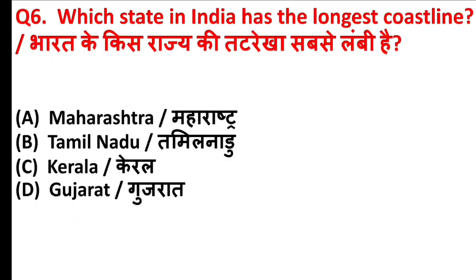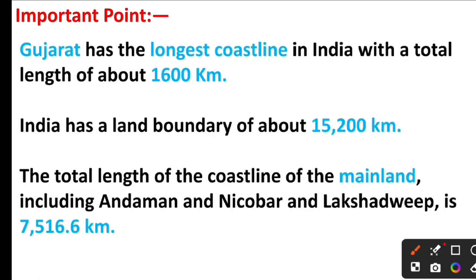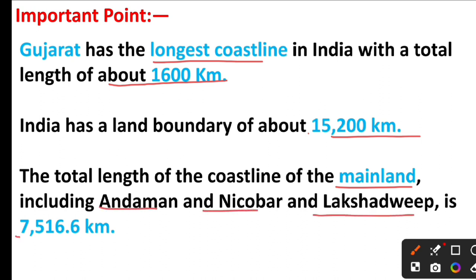Which state in India has the longest coastline? The answer is Option D, Gujarat. The capital of Gujarat is Gandhinagar. Gujarat has the longest coastline in India with a total length of about 1,600 km. India has a land boundary of about 15,200 km. The total length of the coastline of the mainland including Andaman and Nicobar Islands and Lakshadweep is 7,516.6 km.